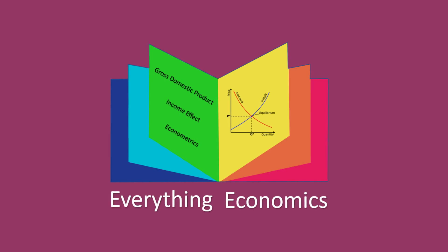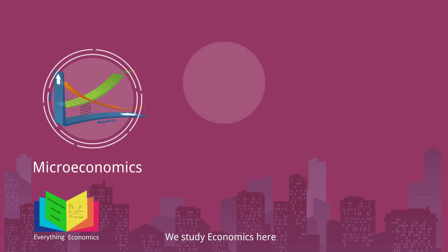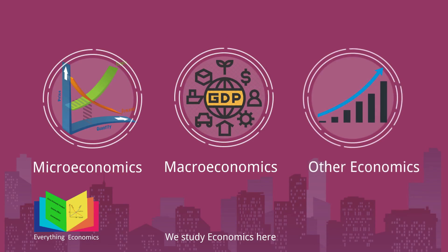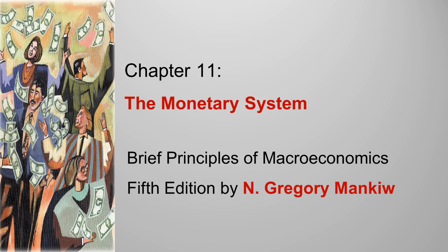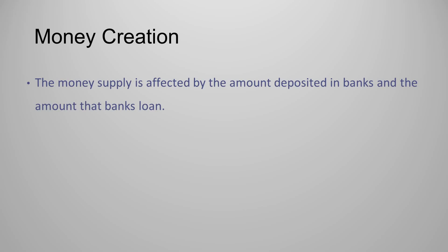Welcome to Everything Economics, where we study microeconomics, macroeconomics, and every other type of economics. This is Part 5 of the chapter on the monetary system, from the book 'Brief Principles of Macroeconomics,' 5th edition by N. Gregory Mankiw. In this part, we will study money creation — how money is created in an economy.